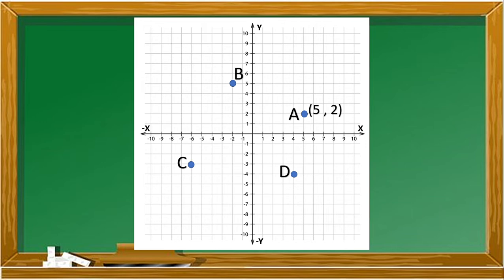Next, what is the coordinate of our point B? For our point B, it is two units to the left and five units up. It is in quadrant two, and the coordinates are negative two and five. As you can see, the sign of our ordered pair in our second quadrant is negative and positive. Now, what is the coordinate of our point C? The coordinate of our point C is negative six and negative three. Point C is six units to the left and three units down. It is in quadrant three, and the sign of our ordered pair in our third quadrant is negative and negative.